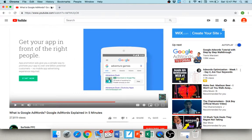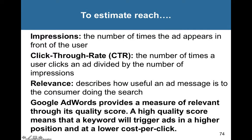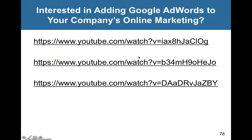Additional metrics for measuring search engine marketing success include: impressions — the number of times an ad appears in front of a user; click-through rate (CTR) — the number of clicks divided by the number of impressions; and relevance — how useful an ad message is to the consumer doing the search. These help evaluate the effectiveness of online marketing campaigns.